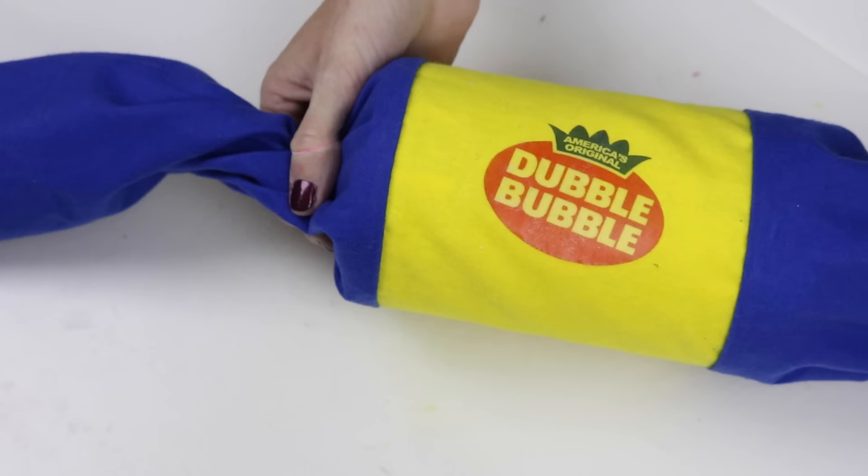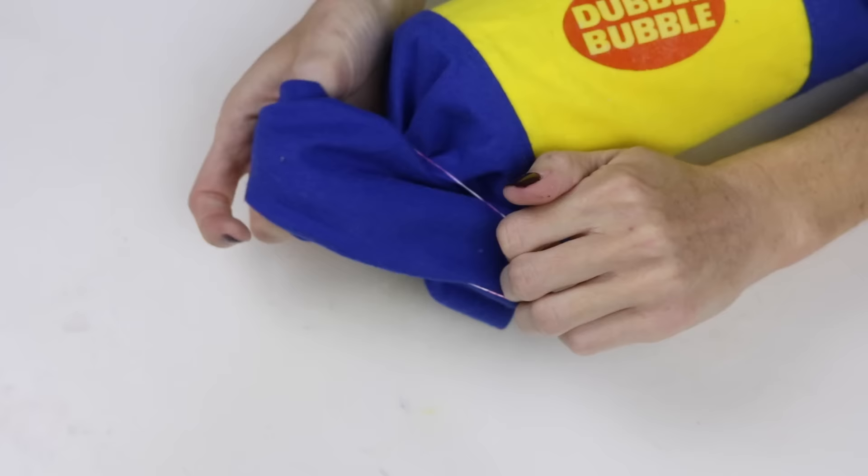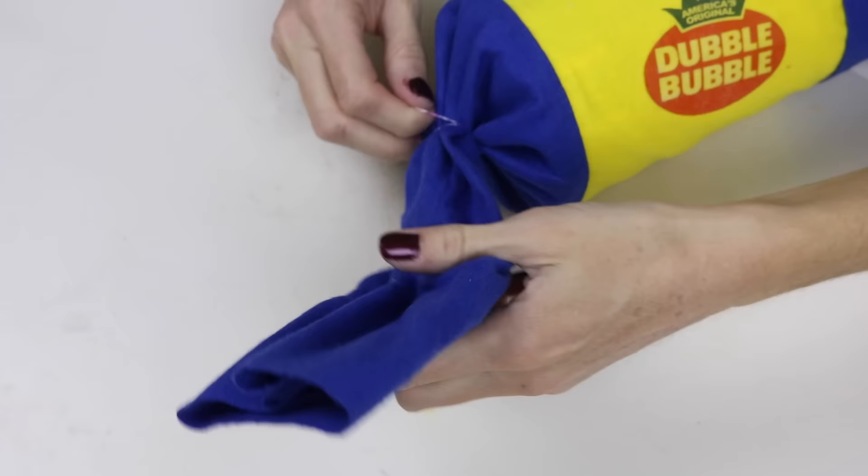I then cinched in the blue fabric and wrapped a rubber band around that. I repeated that process on the other side.